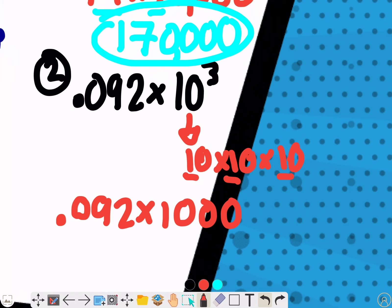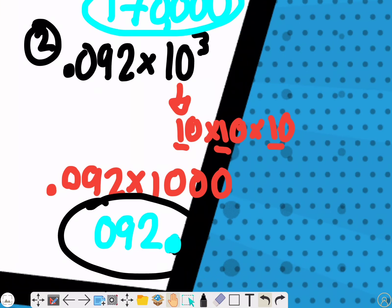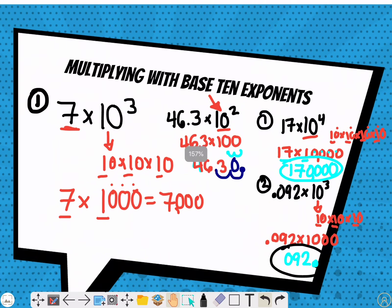So those three zeros tell me I need to jump my decimal over three times to the right. Let me jump my decimal over: one, two, three. So my answer is not point zero nine two - my answer is now ninety-two. You don't have to put that zero there unless you want to. That is my final answer. Hope this helped, guys. Come back for other videos.